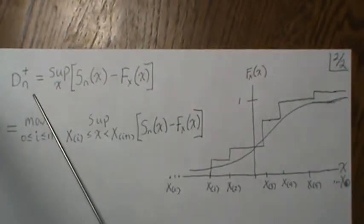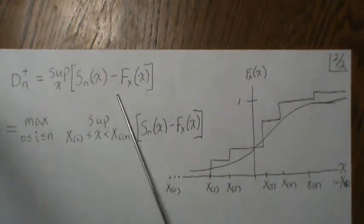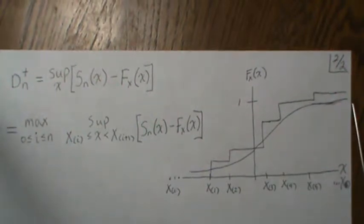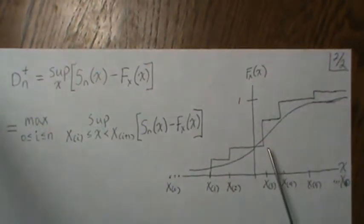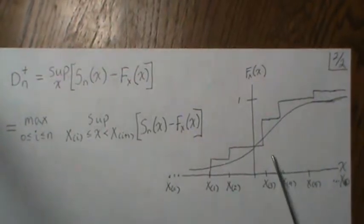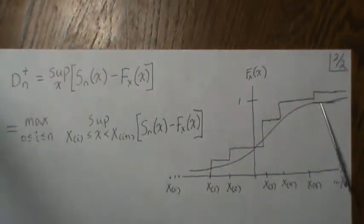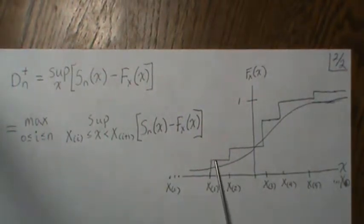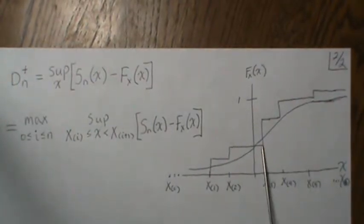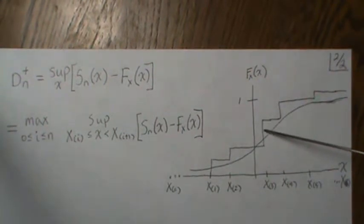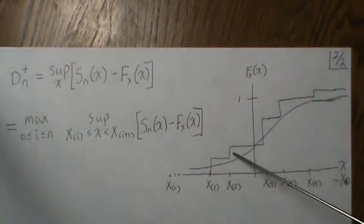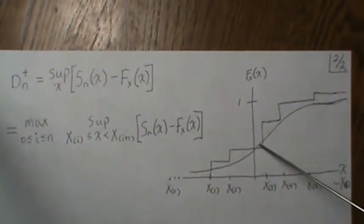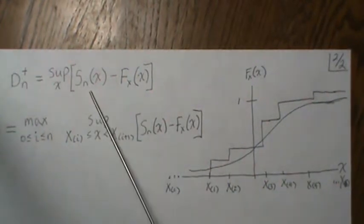Let's draw a graph. For D_n+, which is the one-sided difference, if this is F(x) and this is S(x) (the empirical CDF), we're looking at the difference between them at various points. The supremum is the biggest such difference. Because the empirical CDF is a step function, examining the difference within each step is the same as taking the supremum over the whole curve.